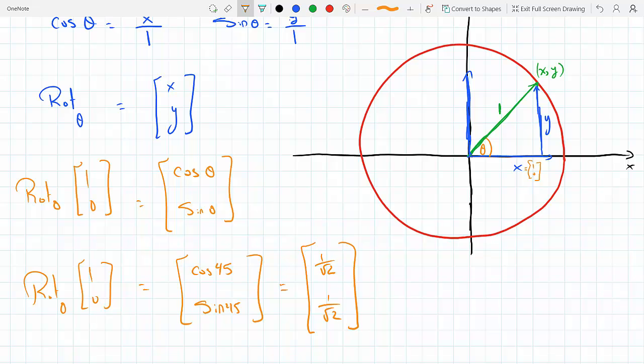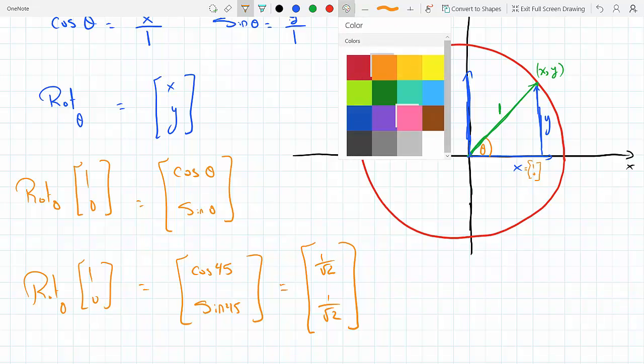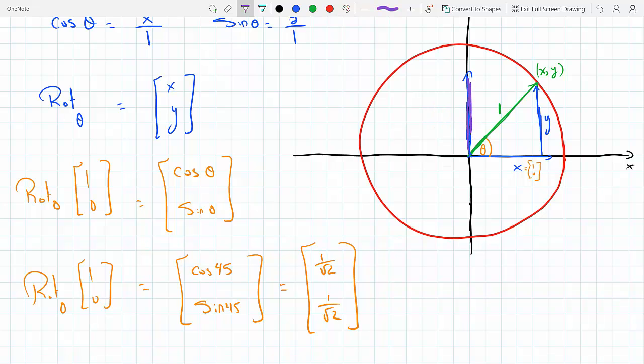So now this is applying this logic on the x component of any vector. Now let me apply that same logic on the y component of the vector. So let me extend this triangle here. So now let's work on this guy here. Let me change the color just so I can distinguish it from the rest.